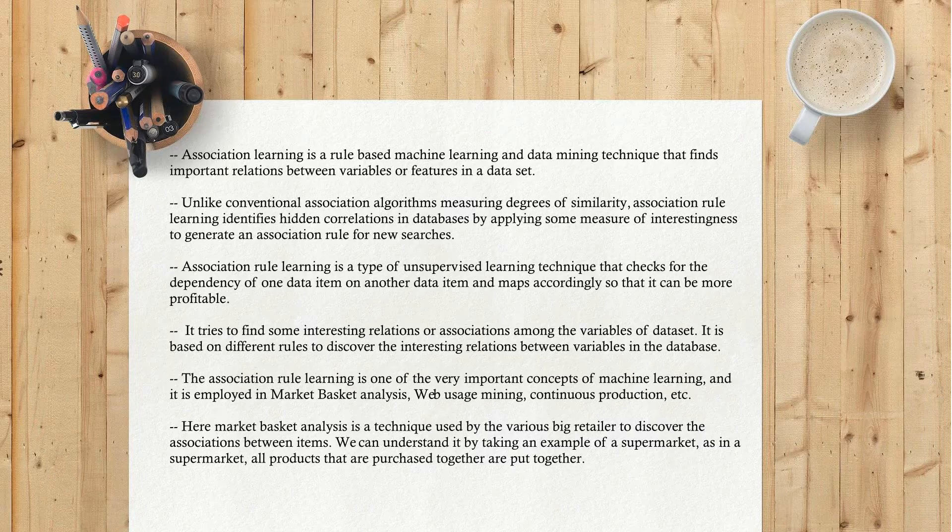Unlike conventional association algorithms measuring degrees of similarity, association rule learning identifies hidden correlations in databases by applying some measure of interestingness to generate association rules for new searches.